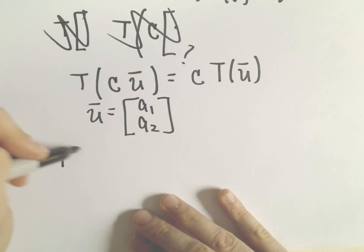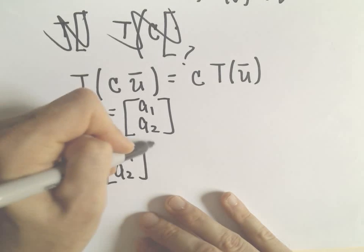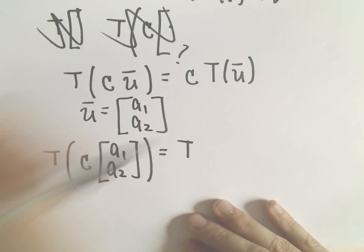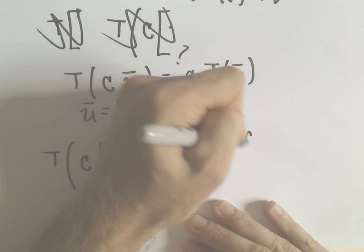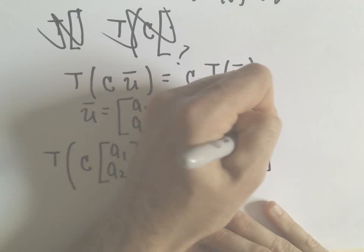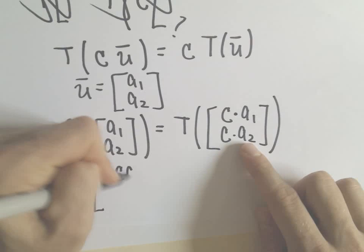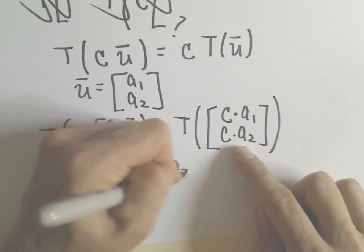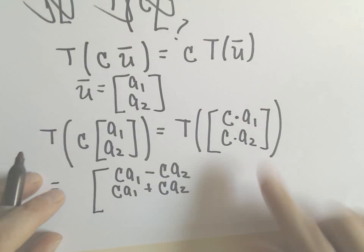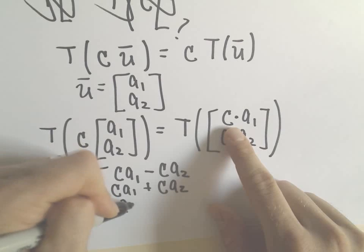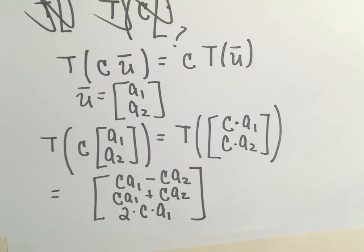So on the left side, if I take C times any scalar, if I multiply that by a1 and a2, we just multiply each component so we'll get C times a sub 1 and then C times a sub 2. Now we have to apply our rule. Take the second component and subtract it away from the first one, add those two components together, and then take whatever the first component was and multiply it by two.